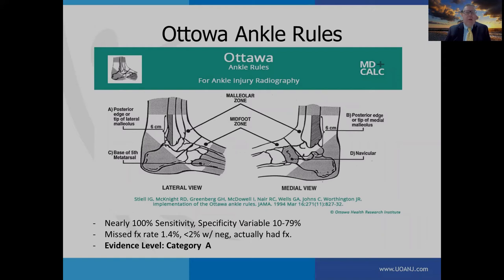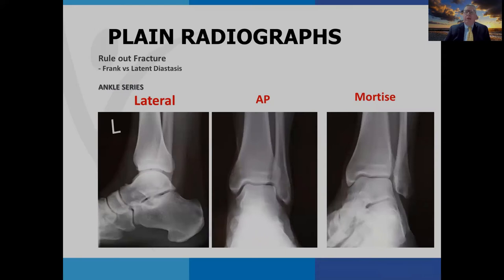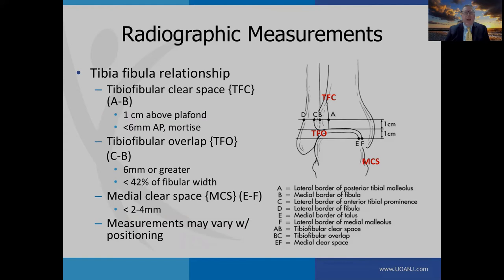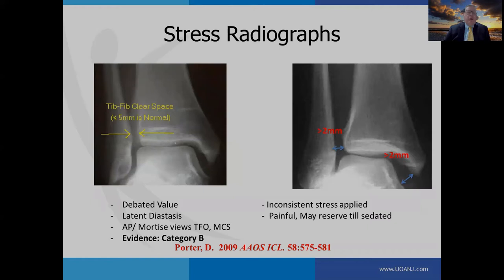With any athlete with bony tenderness around the ankle, consider the Ottawa ankle rules, which are listed in the position statement and carry a level A recommendation. Plain radiographs should be used not only to rule out fracture, but also frank or latent diastasis. Generally we get at least three views — lateral, AP, and mortise — and in some cases weight-bearing views as well. With concerns for a Maisonneuve or fibular fracture, get a complete lower leg x-ray. Radiographic measurements for diastasis include the tibiofibular clear space, tibiofibular overlap — both measured at one centimeter above the plafond — and the medial clear space. Comparing with the unaffected side can help note subtle widening.